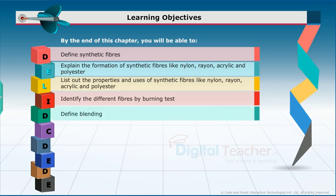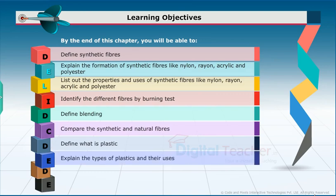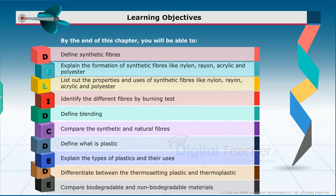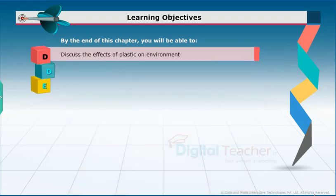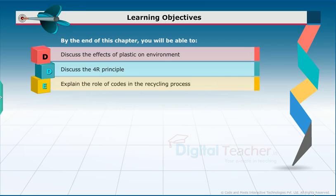Additional objectives include: define blending, compare synthetic and natural fibers, define plastic, explain the types of plastics and their uses, differentiate between thermosetting plastic and thermoplastic, compare biodegradable and non-biodegradable materials, discuss the effects of plastic on environment, discuss the 4R principle, and explain the role of codes in the recycling process.